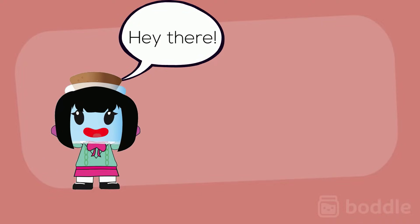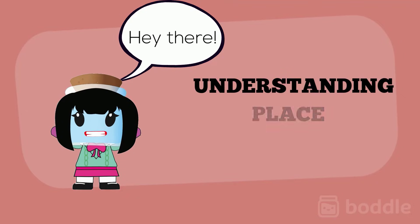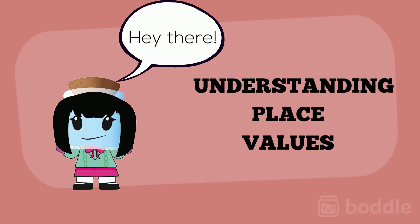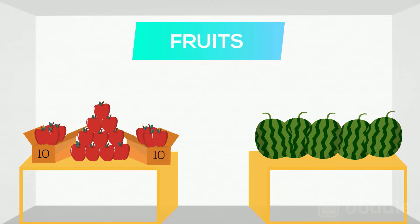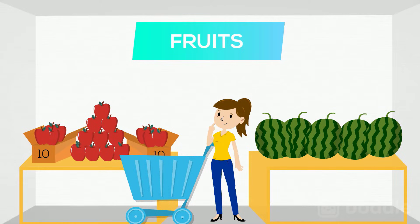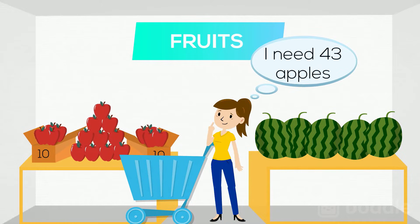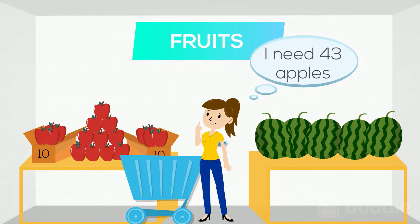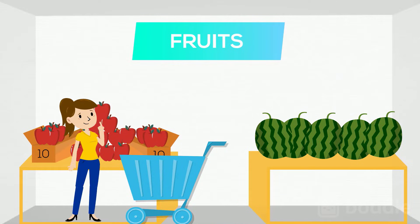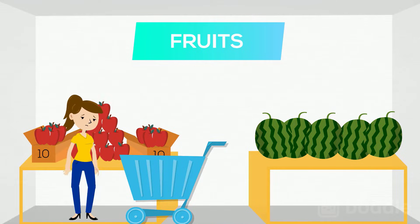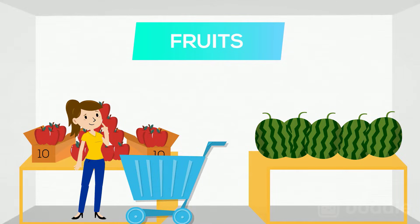Hey there! Today we'll be talking about how place value works. Let's say we're shopping for apples and we need 43 of them to make some apple pies. Picking 43 apples one by one would be a bit tiring, but then we notice that the grocery store also sells apples in bundles of 10.